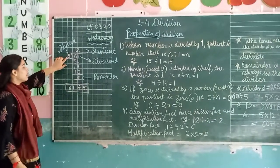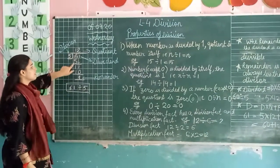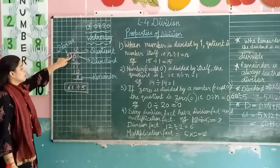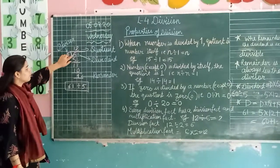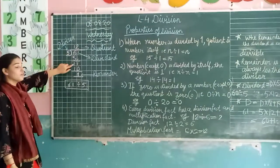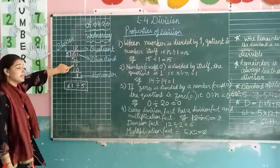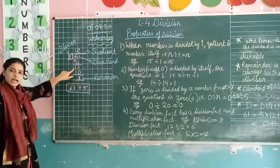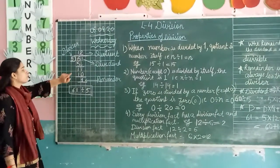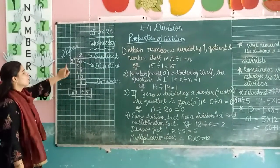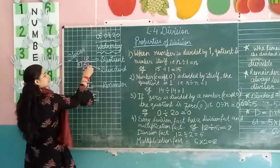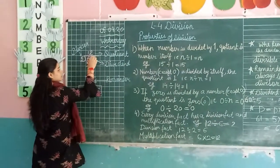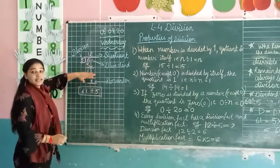Now let's divide by 5. We will subtract 5 from 6. The remainder is 1. 1 divided by 5 will not happen. Now we will count — we will get 1 done.